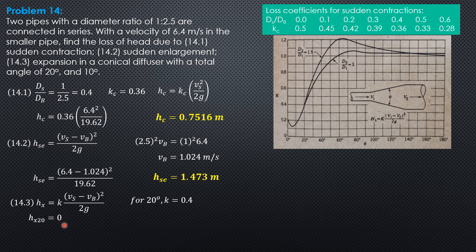Therefore, head loss due to gradual enlargement is 0.4 of this value 1.473. It is equal to 0.5892 meter.